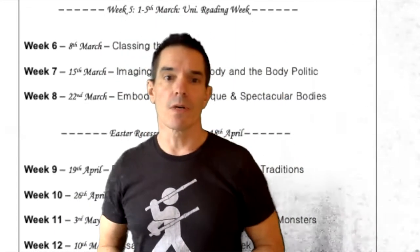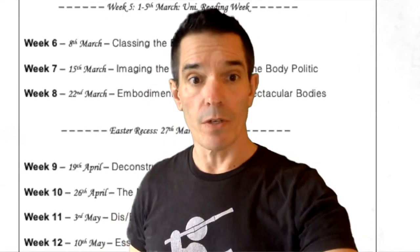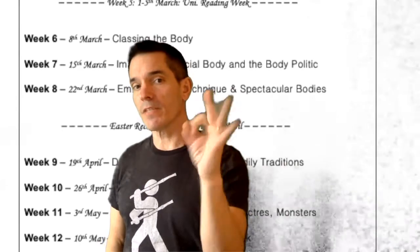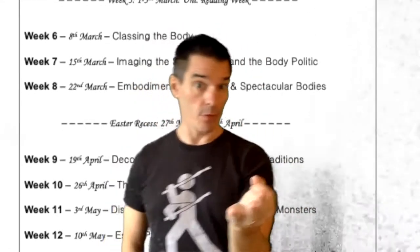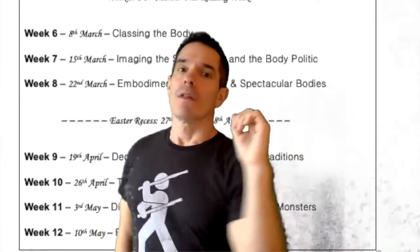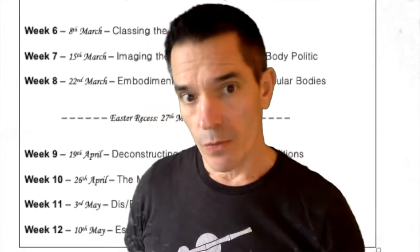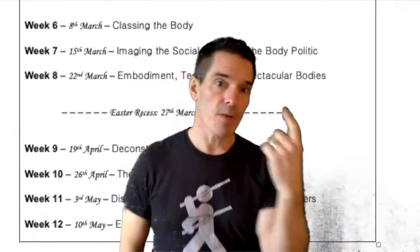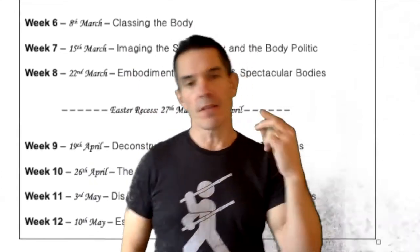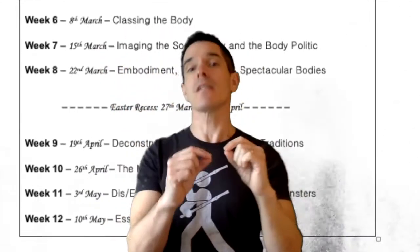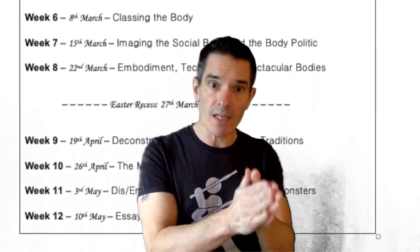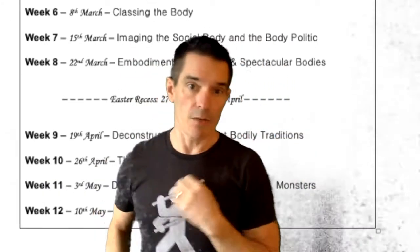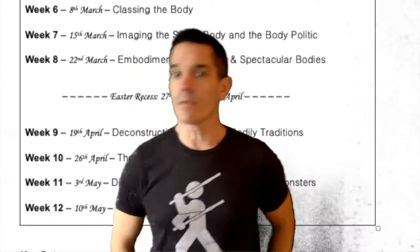Week twelve: you're invited to essay planning tutorials. Key dates: you've got three pieces of assessment. The first piece is a presentation worth 20%. Those of you who've done my modules before will be familiar with this assessment schema: presentation, essay plan, final essay. The essay plan and the final essay can be linked together. The essay plan is for forming your ideas and getting feedback from me, then you build the final essay based on that feedback.